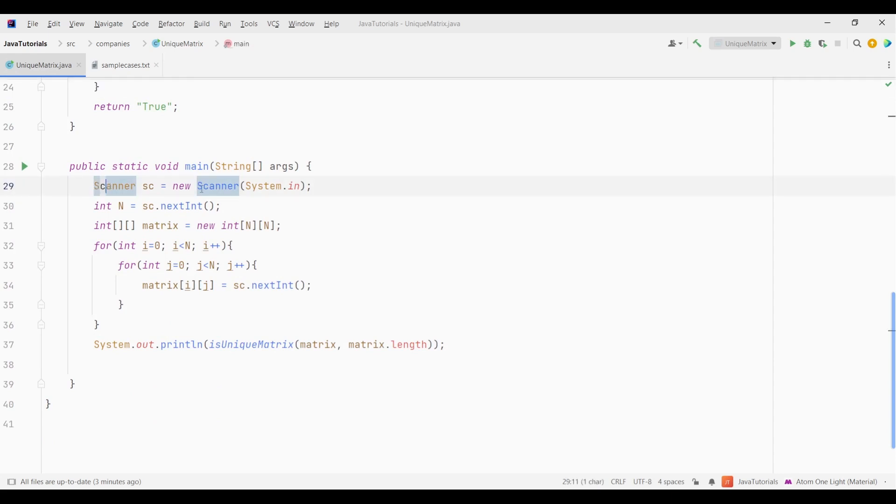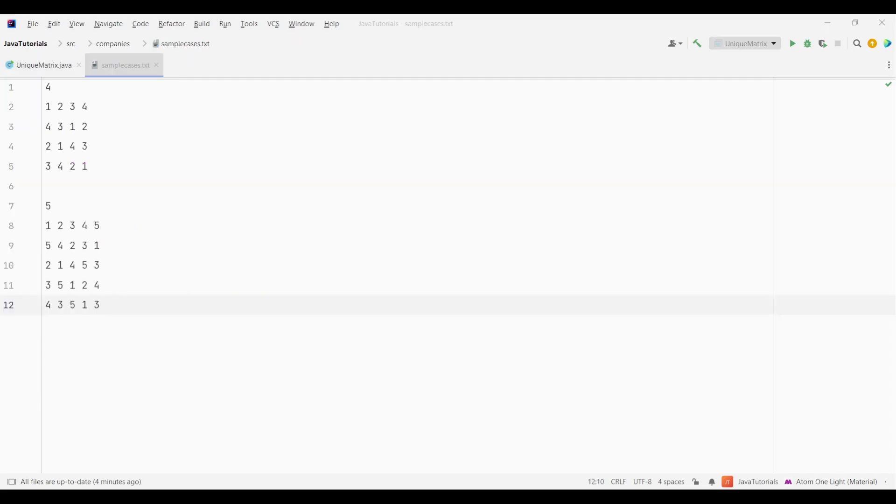Now let's check the output for our code. Here in the main method I have created an object of scanner class which first takes input for variable n, which is the order of our matrix, then followed by the matrix elements itself. I have taken two matrices to check the validity of our code.